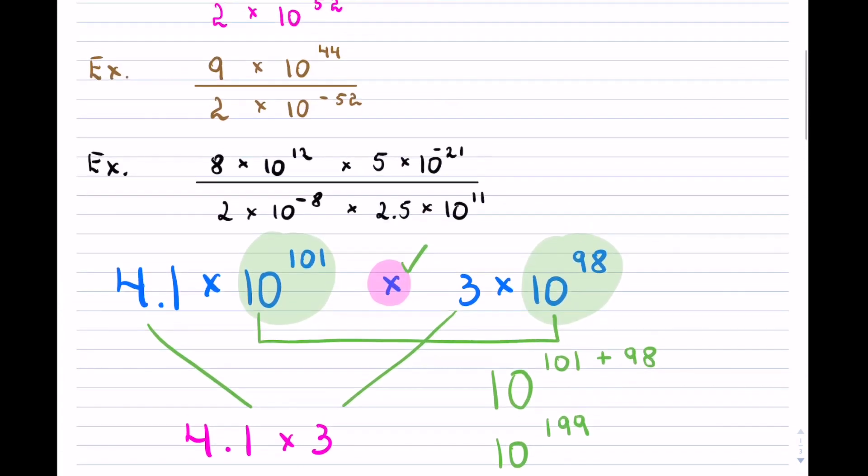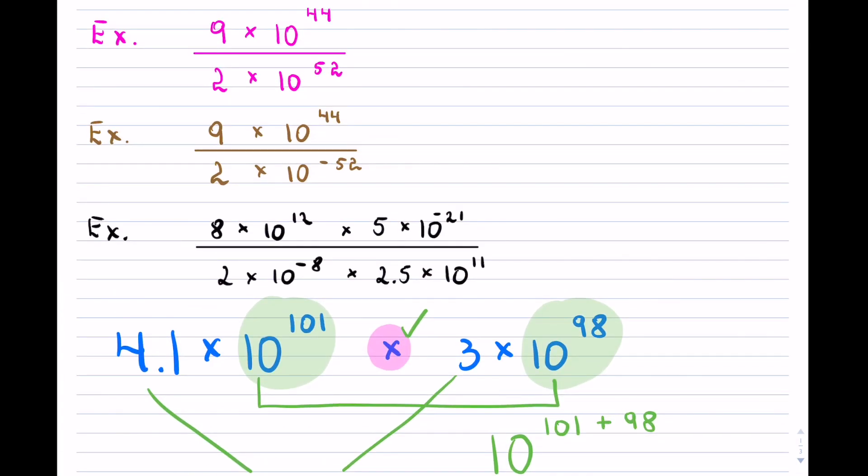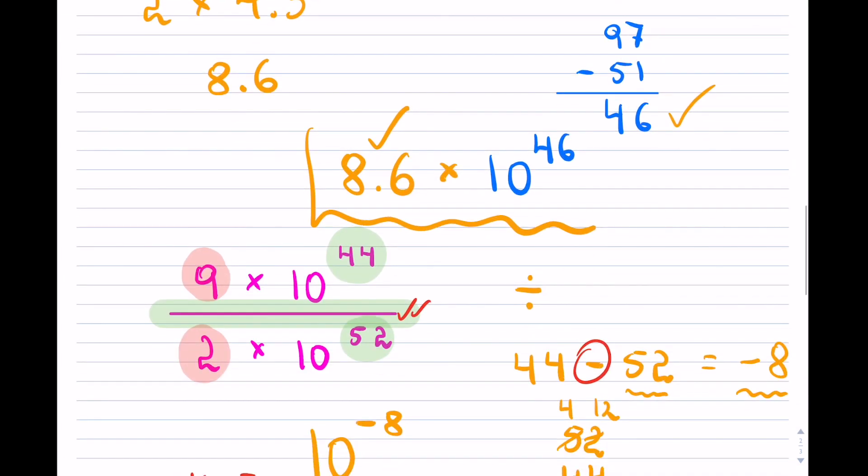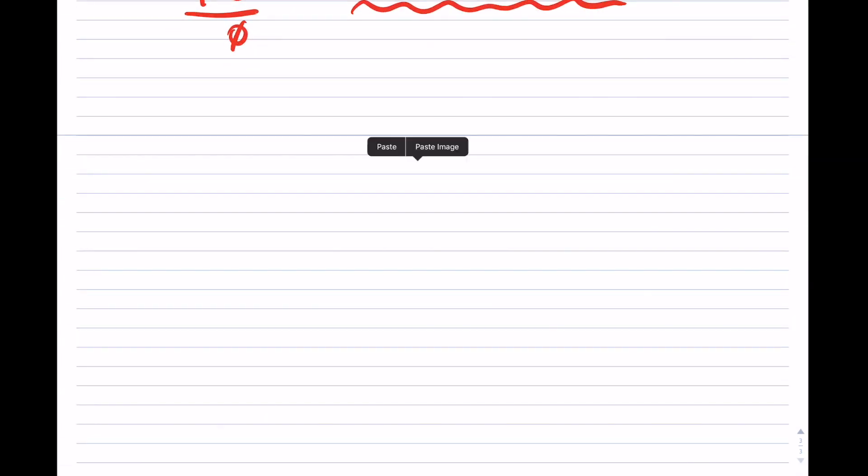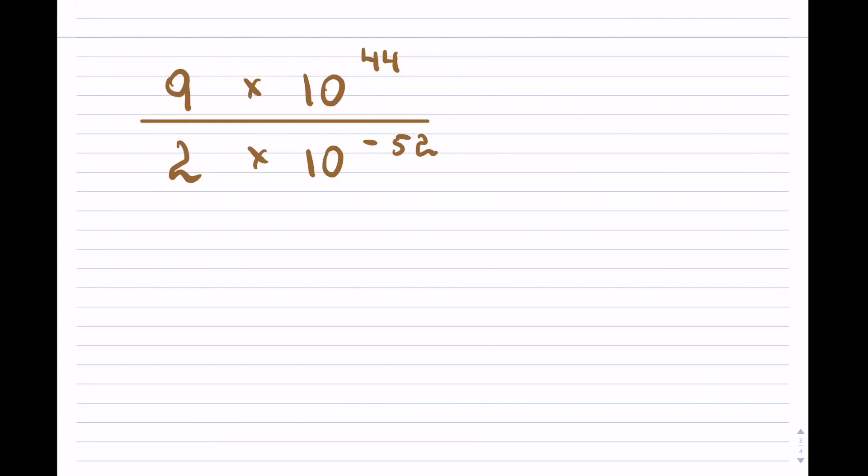But I'm going to show you with the other example, always be careful. So I will copy that down. This is exactly the same, notice it's still 9, 2 here, but our exponent is different. Okay, I made it negative.